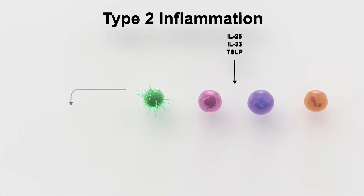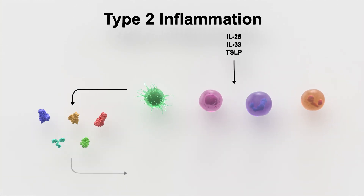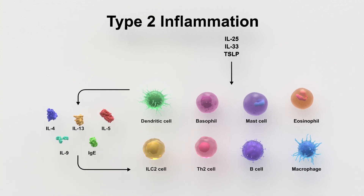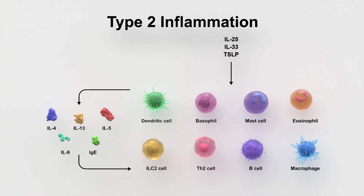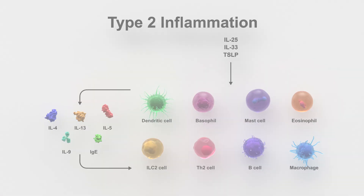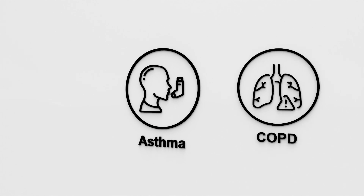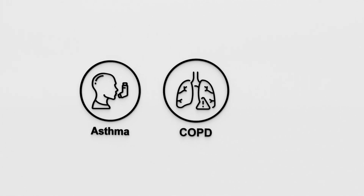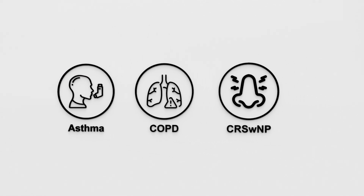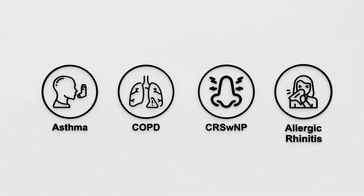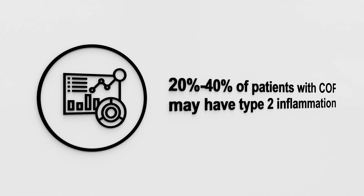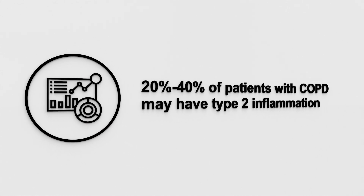Type 2 inflammation is driven by both the adaptive and innate arms of the immune system and underpins the pathophysiology of several chronic upper and lower airway diseases, including asthma, chronic obstructive pulmonary disease or COPD, chronic rhinosinusitis with nasal polyps, and allergic rhinitis. Some studies have shown that 20 to 40 percent of patients with COPD may have type 2 inflammation.